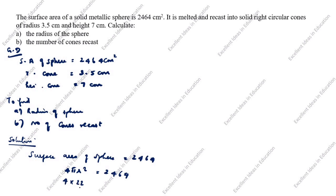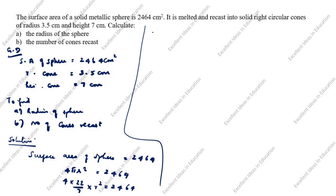So: 4 × (22/7) × r² = 2464. Rearranging, r² = 2464 × 7 divided by 22 × 4.